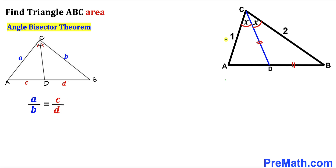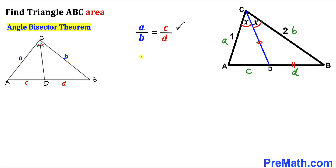In our triangle, let's assume this side is lowercase a, this side is lowercase b, this segment is lowercase c, and this segment is lowercase d. The equation can be written as c divided by d equals a over b, which in our case is 1 divided by 2.